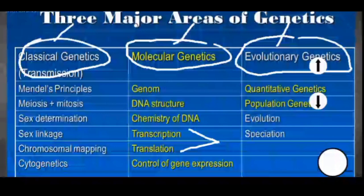When you go for a genetics class, you may start with classical genetics, then move to molecular genetics, and then evolutionary genetics or population genetics. A brief rundown: classical genetics deals with Mendelian and non-Mendelian crosses; molecular genetics deals with the human genome, its structure and chemistry, and protein synthesis; and population genetics deals with the evolution of a population over time, speciation, the various species, and the Hardy-Weinberg equilibrium.